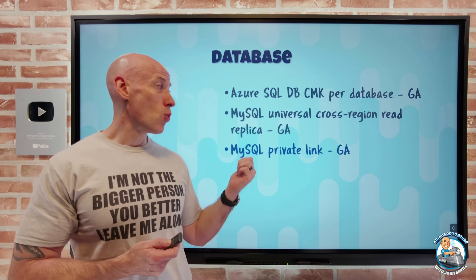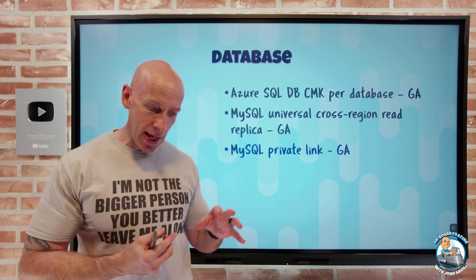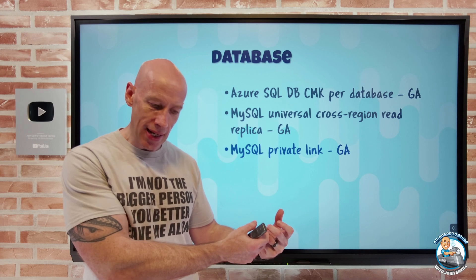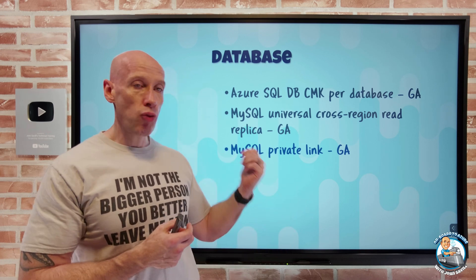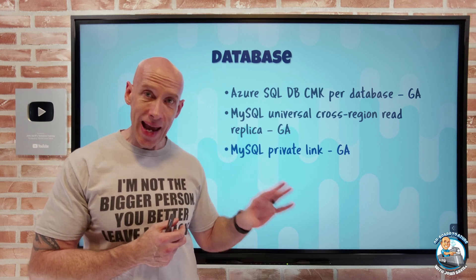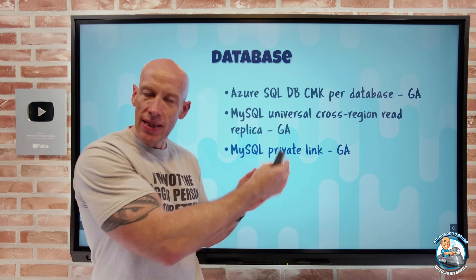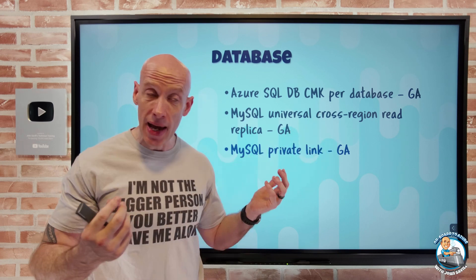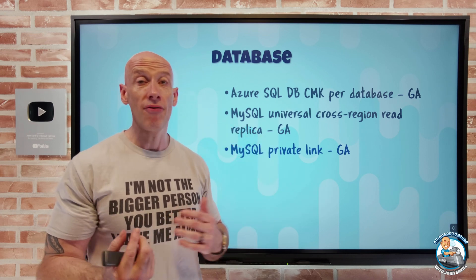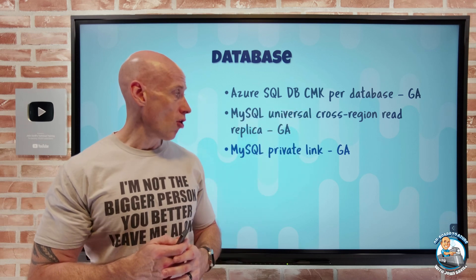MySQL private link has also gone GA. This is an alternative to the existing private access that integrates with a virtual network using a dedicated subnet — it's one or the other. If you want to use private link, configure the instance with public access and then add private endpoints, which are IPs in a particular VNet or set of VNets that directly connect to that MySQL instance. This is really useful for non-peered environments that need to connect into MySQL.